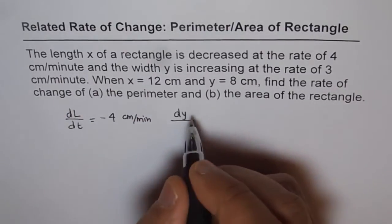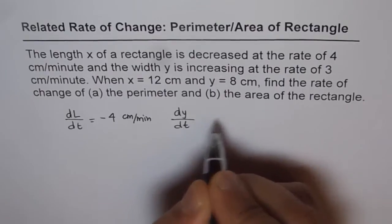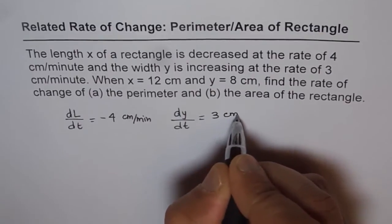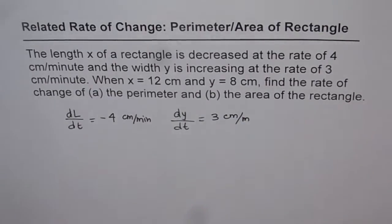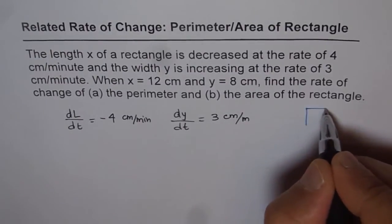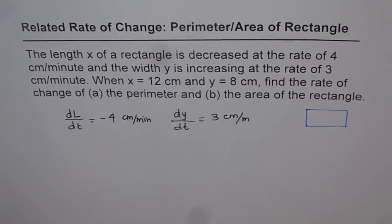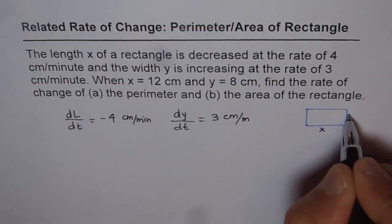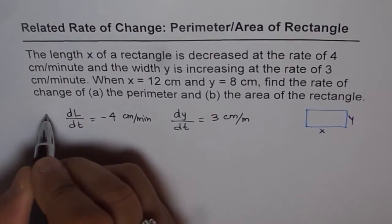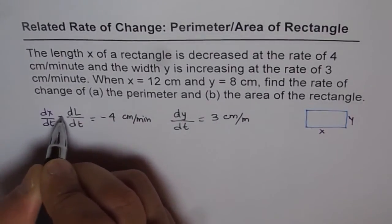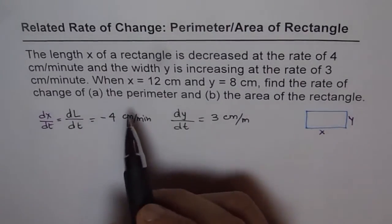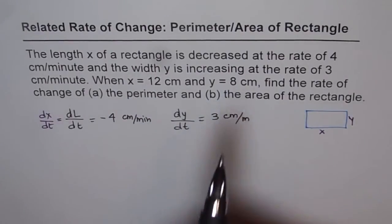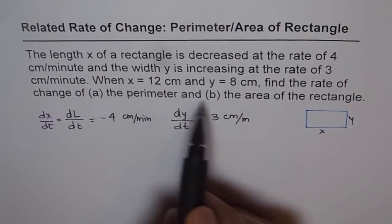So dy/dt is increasing at the rate of 3, that is plus 3 cm per minute. We have a rectangle whose length and width are changing with time. Length is x and width is y. So dx/dt equals minus 4 cm per minute. Now, when x equals 12 and y equals 8 cm, find the rate of change of perimeter and area.